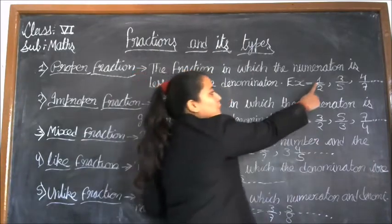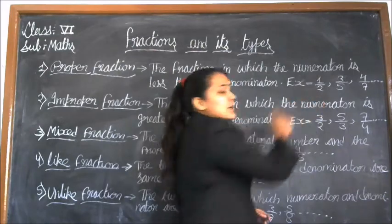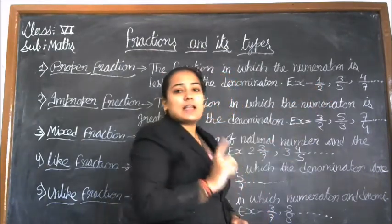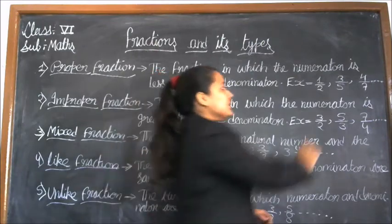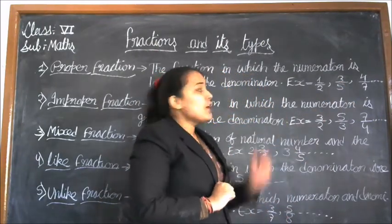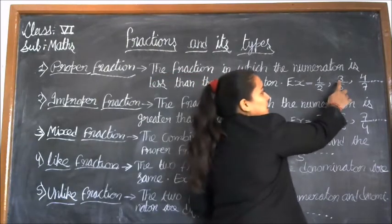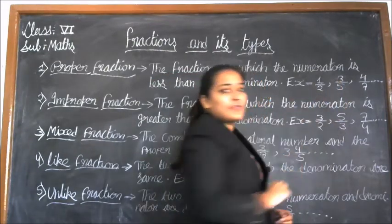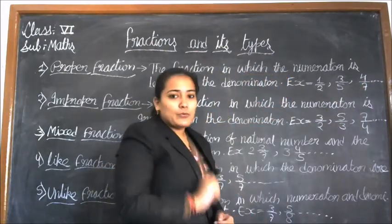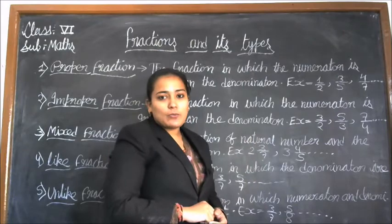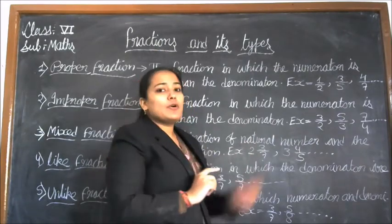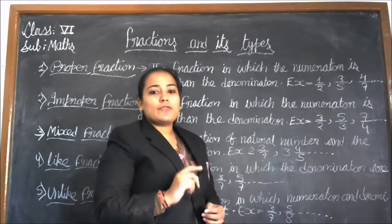In 1 upon 2, 1 is the numerator and 2 is the denominator, and 1 is less than 2. In 3 upon 5, 3 is the numerator and 5 is the denominator, and 3 is less than 5. In 4 upon 7, 4 is the numerator and 7 is the denominator, and 4 is less than 7. Therefore, these are proper fractions.